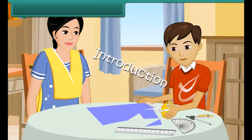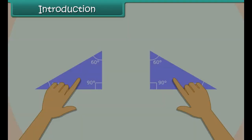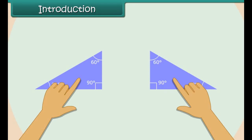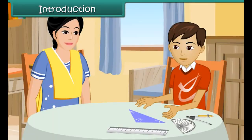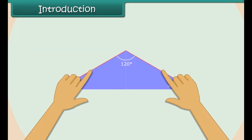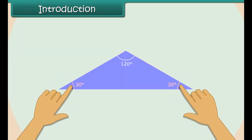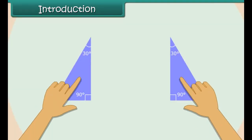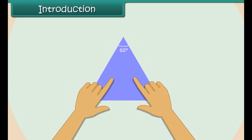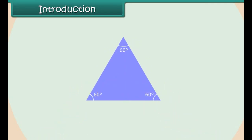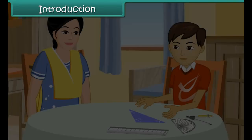Mom, look, I made a new triangle by joining two identical right-angled triangles. That's great, Nick. Did you observe the sides and angles of the new triangle? Yes, Mom, two sides and two angles are equal. Wonderful. Now join two right-angle triangles to create a new triangle with all sides and all angles equal.